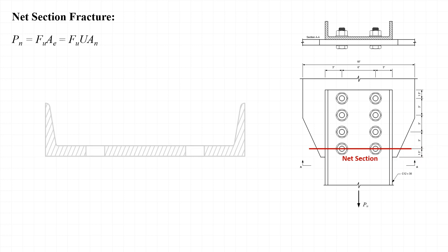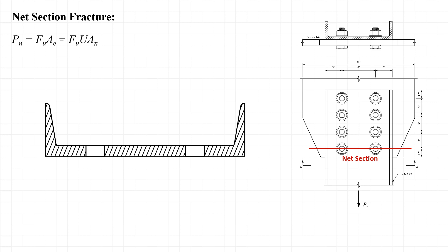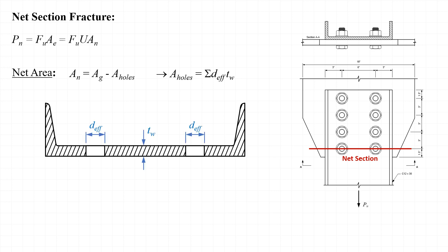Net section fracture is evaluated at a section that passes through the first two bolts as we move from the gross section into the joint. When we evaluate the net area, we take A sub n as the gross area A sub g minus the area removed in the fabrication of the holes. To evaluate the area of the holes, we take the product of the effective diameter of the hole and the thickness of the part that was drilled — in this case the thickness of the web, T sub w.